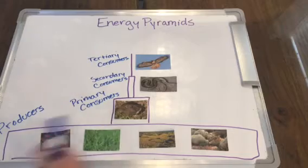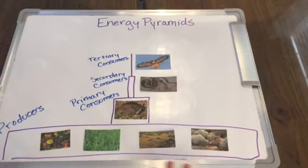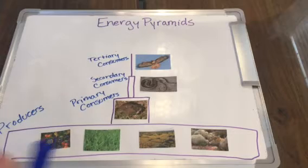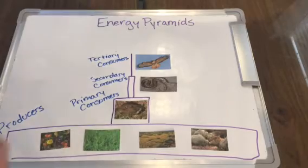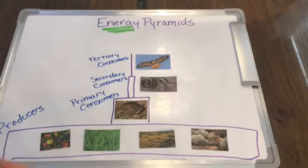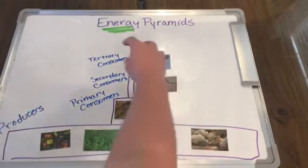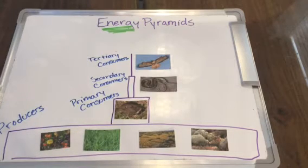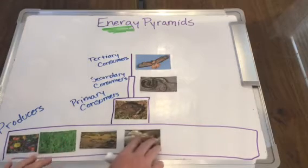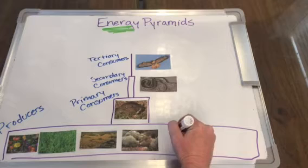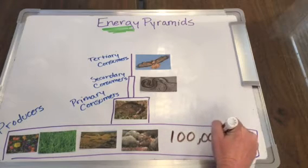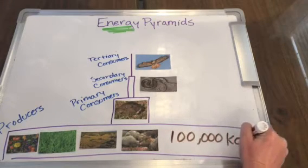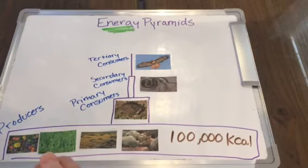So what does this all mean? Is the energy pyramid just a food web, or is it more than that? The energy pyramid is actually a lot more than just a food pyramid. The energy part of that name refers to how much energy is in each individual level in this system. I want to put some numbers to this and give you some examples.